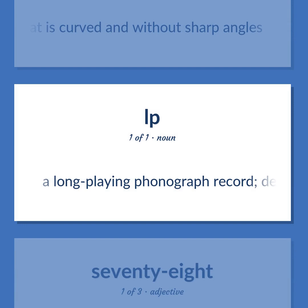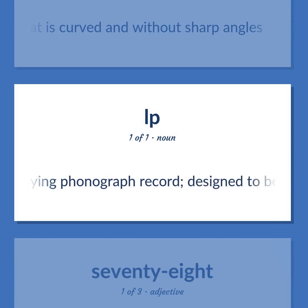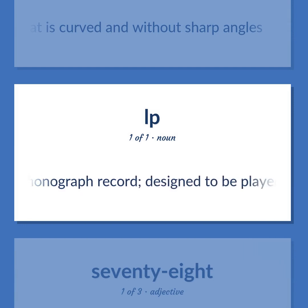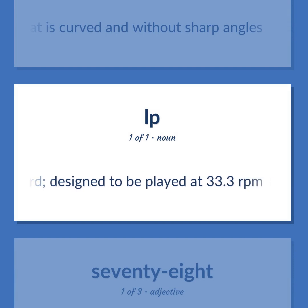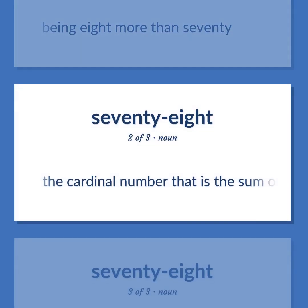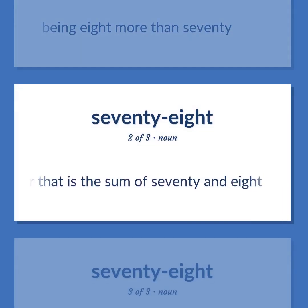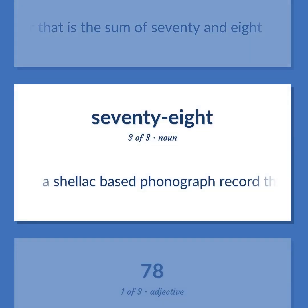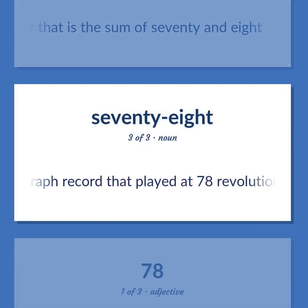LP: a long-playing phonograph record designed to be played at 33.3 revolutions per minute. 78: being 8 more than 70; the cardinal number that is the sum of 70 and 8.